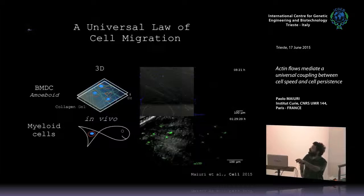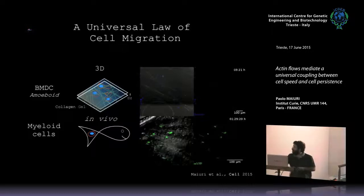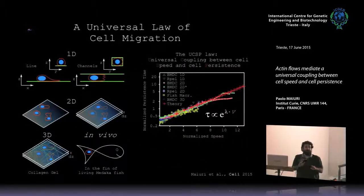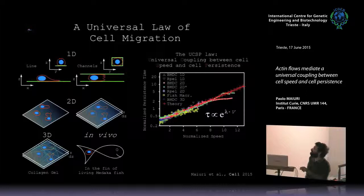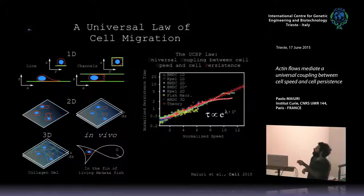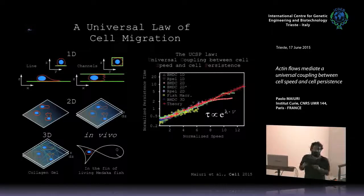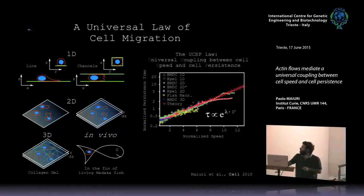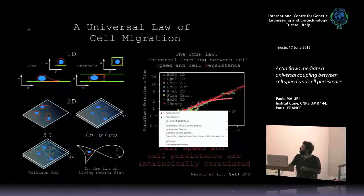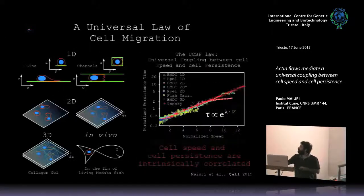We also tested the dendritic cells in a 3D structure by embedding them in a collagen gel and squeezing them again — the concept of squeezing is very important. Not only do you have a roof on top of the cell where it can push, but also all around there is a matrix that the cell has to move inside, which is why we call this 3D. We also tested another kind of cell — melanoma cells — inside the fin of a living zebrafish. What we surprisingly found is that it doesn't matter if you move in 1D, 2D, 3D, or in vivo, and it doesn't matter whether you are mesenchymal or amoeboid: all the curves of persistence versus speed can collapse into a unique master curve with an exponential relationship between the persistence time and the speed.